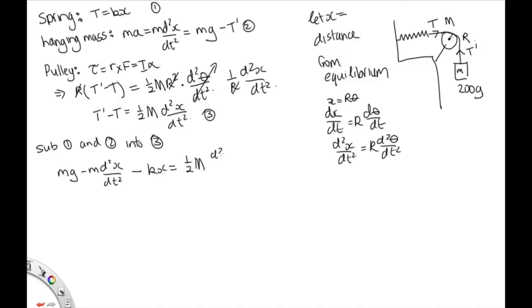and that's equal to a half capital M d squared x dt squared. So we can write d squared x dt squared outside of a half capital M plus little m is equal to mg minus kx. So d squared x dt squared is equal to mg over a half capital M plus little m minus kx over a half capital M plus little m.